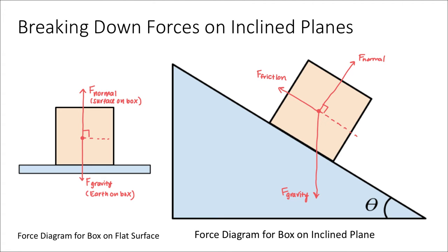Now that my force diagrams are complete, I want to point out an interesting difference. In the normal example with a box on a flat surface, I normally define my coordinate system where y is straight up and x is to the right, and this is fine because most forces are either vertical or horizontal. But if I apply the same coordinate system to the inclined plane, we run into an issue: the only force acting in the y or x direction is gravity. The frictional force and the normal force are both pointing at angles relative to the coordinate system, so we'd have to break both of them into components.